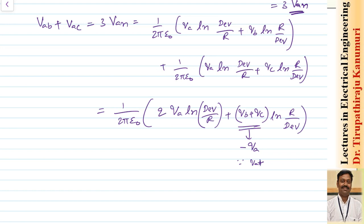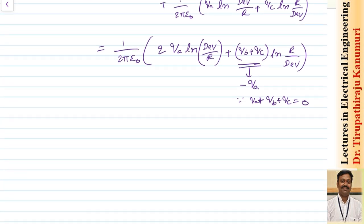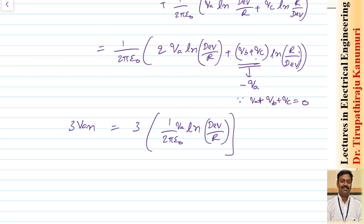Substituting Q_B + Q_C = −Q_A, the minus sign reverses numerator and denominator in the logarithm. So 3·V_AN = 3 × (1/(2π ε₀)) × Q_A · ln(D_eq / r). Dividing both sides by 3, V_AN = Q_A/(2π ε₀) × ln(D_eq / r).